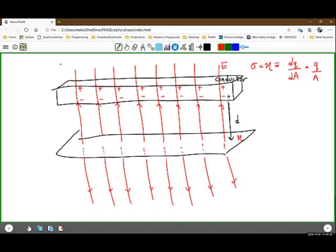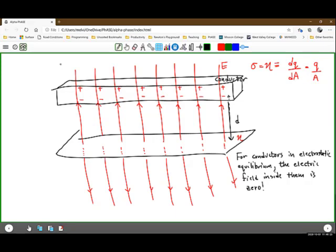Now here's the thing. There can be zero electric field in a conductor in electrostatic equilibrium. Let me say that again and I'll actually write it down. So we will say for conductors in electrostatic equilibrium, the electric field inside them is zero.